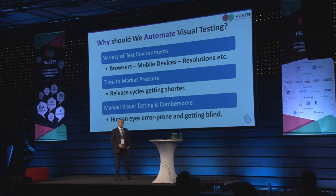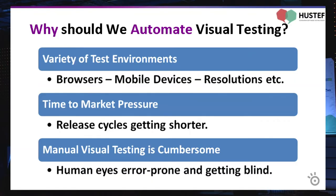Why should we automate this process? First of all, there is a variety of test environments. We do test activities for several browsers, mobile devices, resolutions, and so on. If you multiply these variables, we get huge environment diversity. If we want to run the same tests in each environment, it is not easy to do in a short period of time. So we have to automate this process, reduce the test execution time, and cover test environments as much as possible.